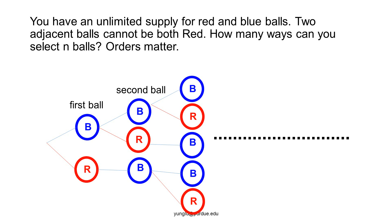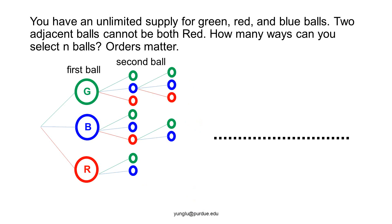Two adjacent balls must not be both red. This lecture adds another color. We now consider green, blue, and red balls. The restriction is the same: two adjacent balls cannot be both red. How many ways can we select N balls?